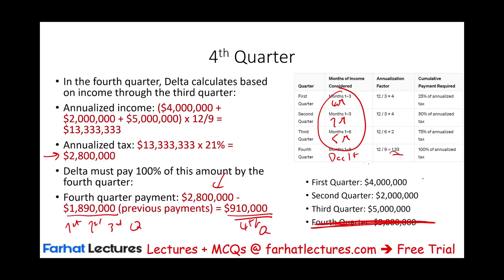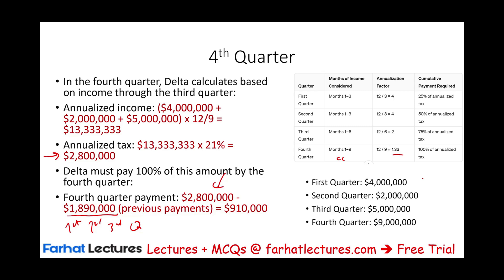I hope this example helped clarify how to do this. Remember: for the first quarter, you can annualize or take 25% of the prior year tax liability. You choose the cheaper option — if annualizing is cheaper, you annualize.